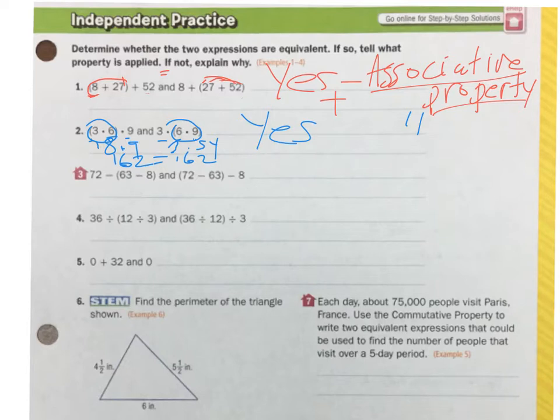Go ahead and pause the video and try number 3. Number 3 says that we have 72 minus 63 minus 8. So we have two expressions. They're in the same order, the same numbers. But they're subtraction this time. So I don't think associative property works with subtraction. So I'm going to say no. But now I have to tell you why.